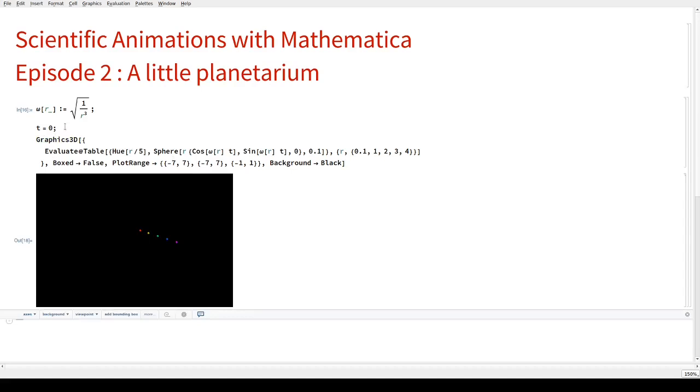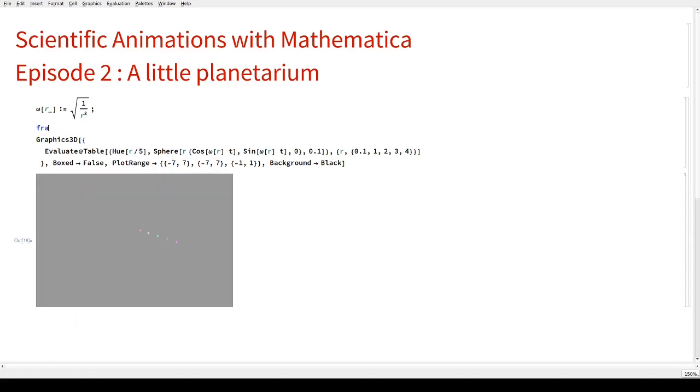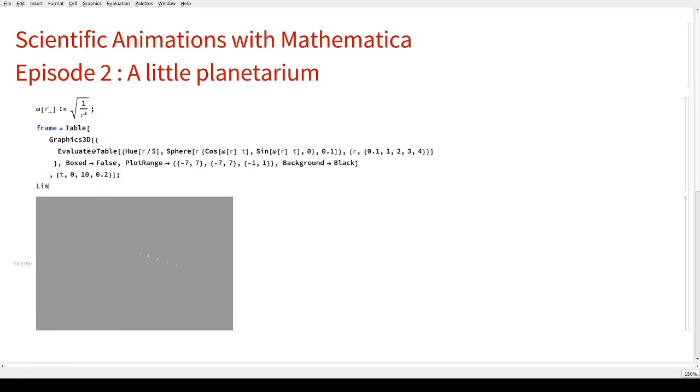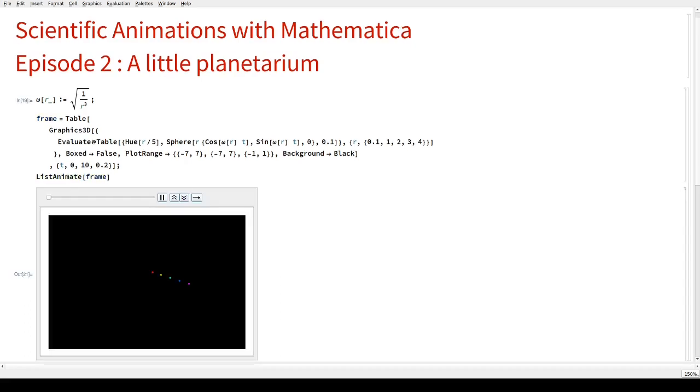Okay, this is a starting point. Next step, let's move them. As we did last time, let's create the frames one by one as a table. What we want is time to go, let's say from zero to 10 in steps of 0.2, just to start looking at it. And then we would like to animate these frames. Okay, this is already a nice starting point.